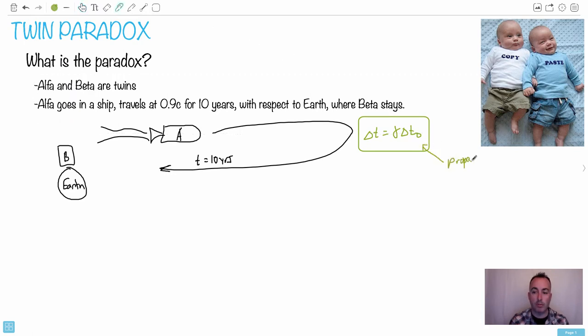That's the person who measures time for whom the whole event happens at the same place. In this case, that's Alpha, because she's sitting in her spaceship. Nothing actually happens to her. She just sits in her spaceship, the Earth goes away, and eventually the Earth comes back again. For her, everything took place at the same place. So in that sense, she's measuring the proper time. Because of that, we can actually calculate this.